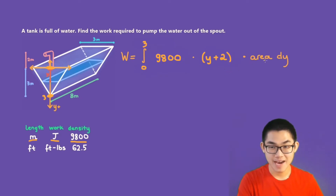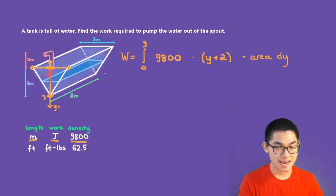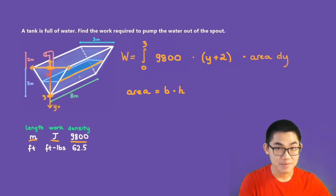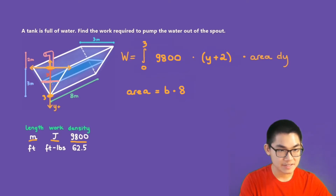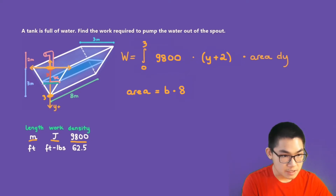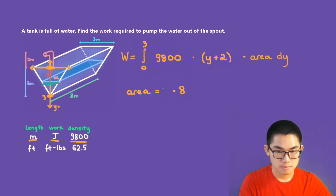Last but not least, we need to find the area. The area of this layer of water is a rectangle, so the area equals base times height. The height of this rectangle is always 8 meters. The base from one side to the other is 2 times x, so therefore the area is equal to 16x.